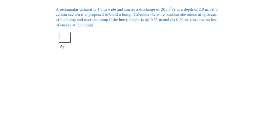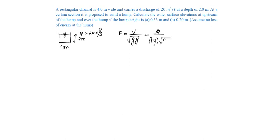Given a 4-meter-wide rectangular channel with a discharge of 20 cubic meters per second at a depth of flow of 2 meters, let us find the Froude number: Fr = V / √(gY) = Q / (B × Y × √(gY)) = 20 / (2 × 4 × √(9.81 × 2)) = 0.564, which is less than 1, so the flow is subcritical.